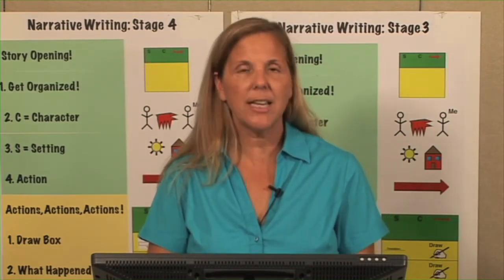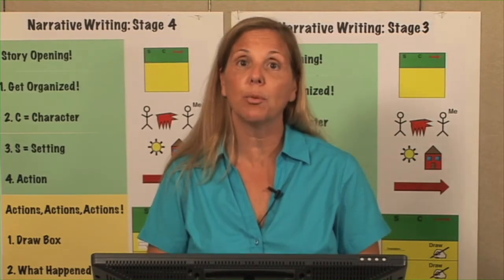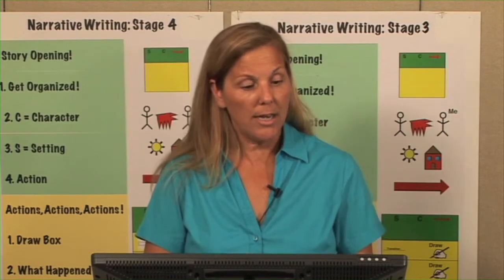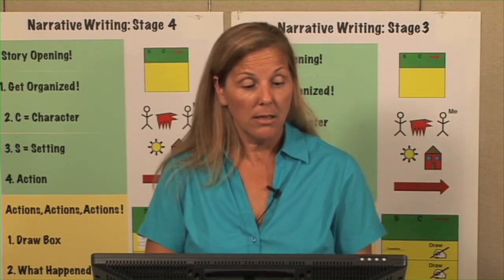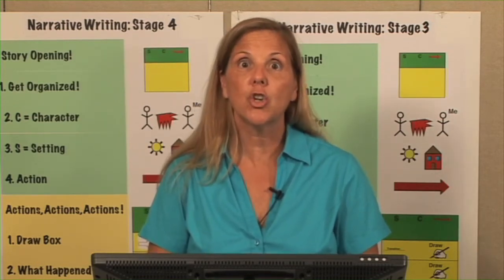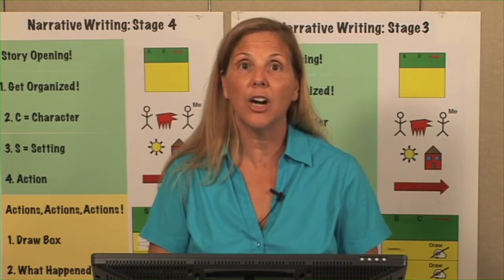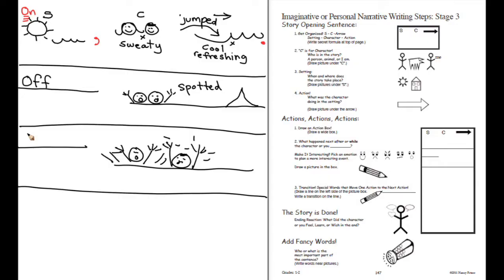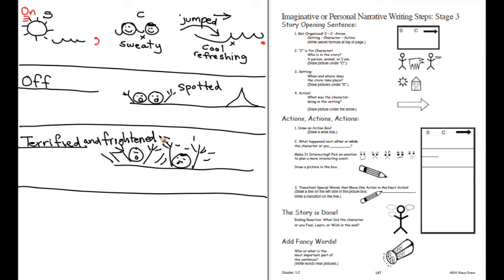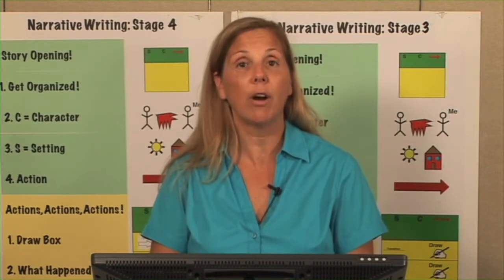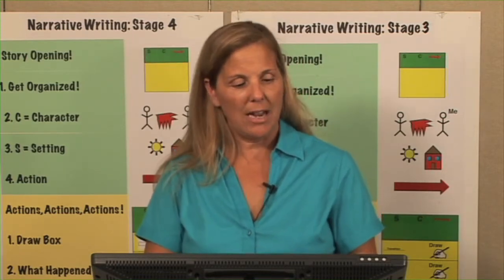So what could I do at the beginning of my sentence? I could start with emotion words. I could write 'terrified and frightened.' Terrified and frightened — the kids started waving their hands in the air for help. Now we have our sentence.